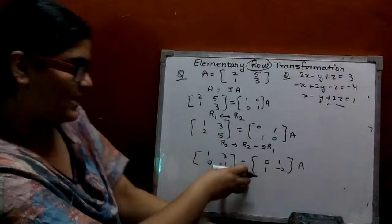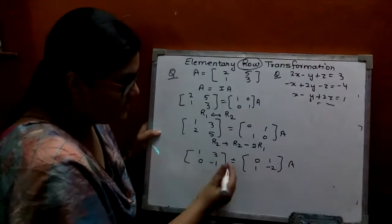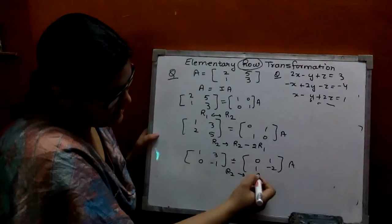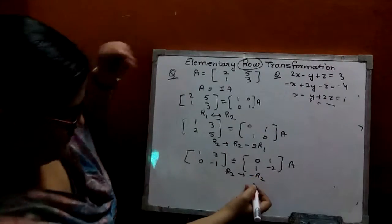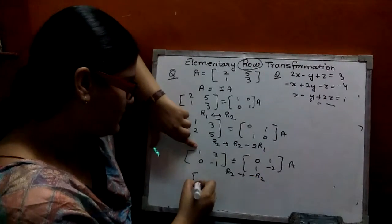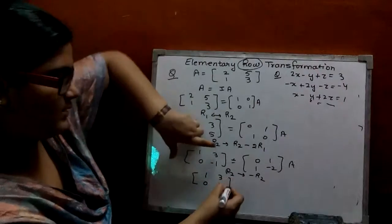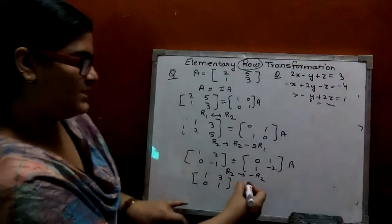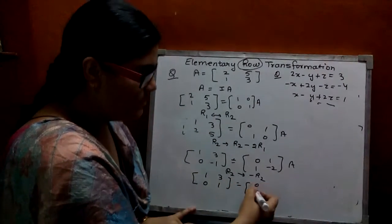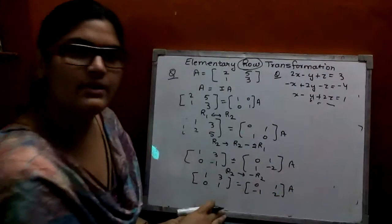Now you have to make 1 here. You just take the negative of R2. So this becomes [1, 3; 0, 1] on the left, and on the right this becomes [0, -1; 1, 2].